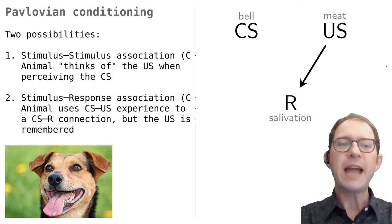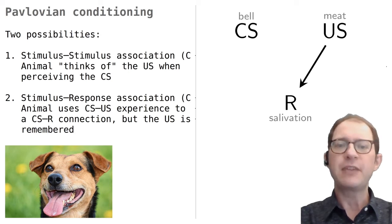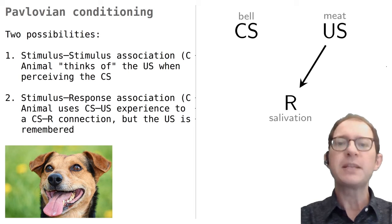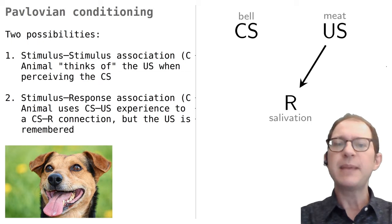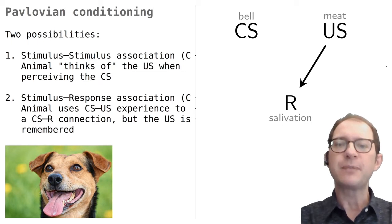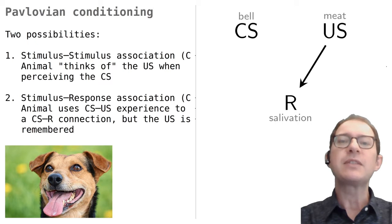The arrow indicates that in the mind of the dog there is already a connection between the US and the response, before the experiment starts. This is our explanation for why the sight and smell of the meat evokes salivation. Psychologists refer to these connections as associations.